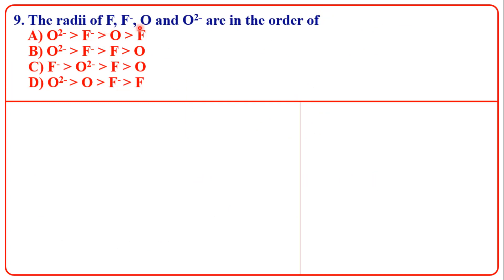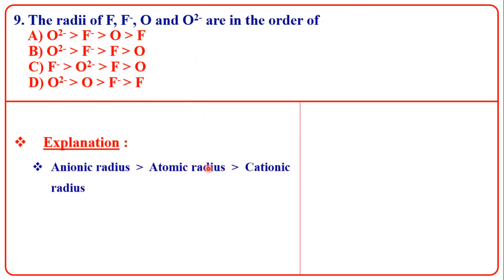Next question: the radii of F, F⁻, and O²⁻ are in the order of — correct order. Atomic radius of oxygen is greater than atomic radius of fluorine, since as we move left to right along a period, atomic radius decreases. So oxygen's atomic radius is greater than fluorine's.